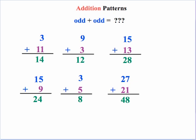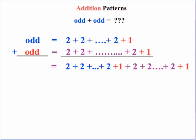What about an odd number plus another odd number? The pattern seems to be even. In the general case, the first odd number is so many 2s plus a 1, and the second odd number is so many 2s plus 1. We can take each of those 1s and combine them to make another 2. So now we have the sum of nothing but 2s, which results in an even number. An odd number plus an odd number gives us an even result.